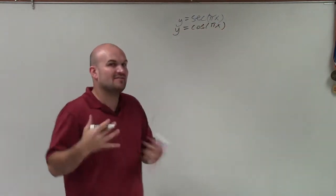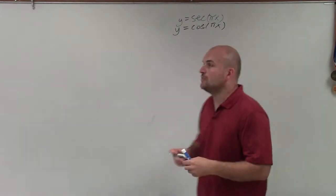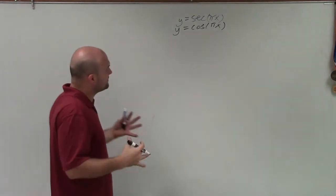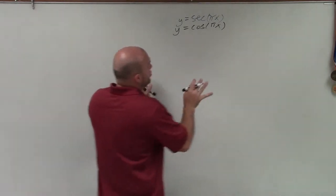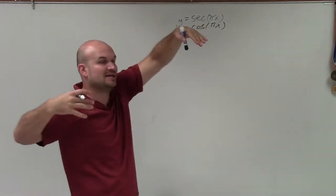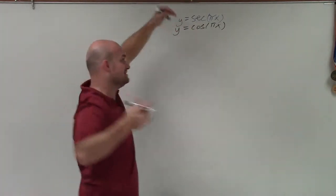So I really want to graph y equals cosine of pi x. We use this to identify the shapes of the graph so that we can then actually graph the secant graph. When we're graphing the cosine graph, the main important thing is we want to understand what is our a, b, c, and d.